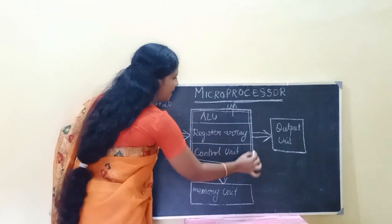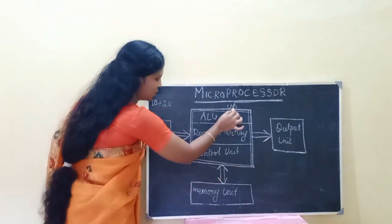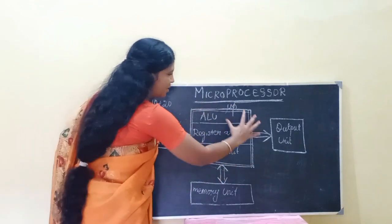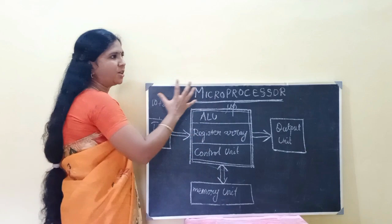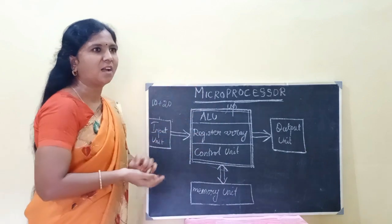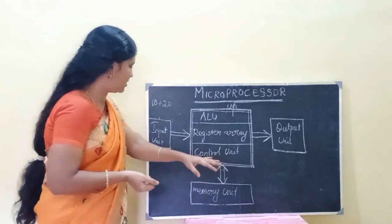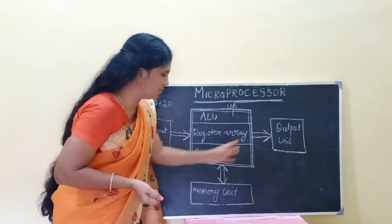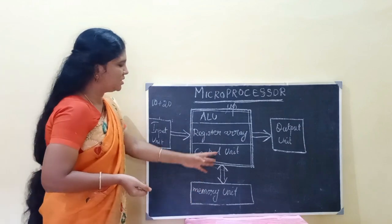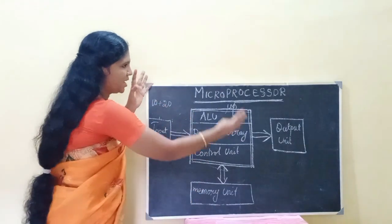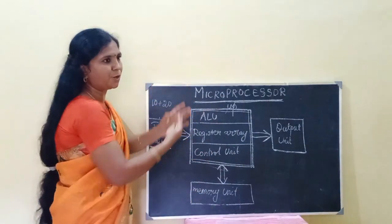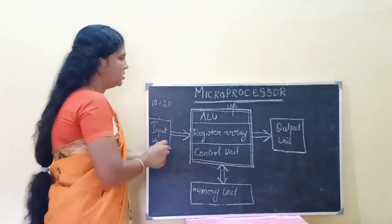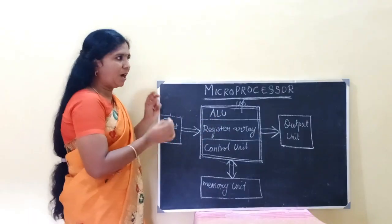We will say the microprocessor has additional parts for data transfer: Input unit, Output unit, and Memory unit. If you have these 3 units, we can use a computer. So this is a microprocessor.